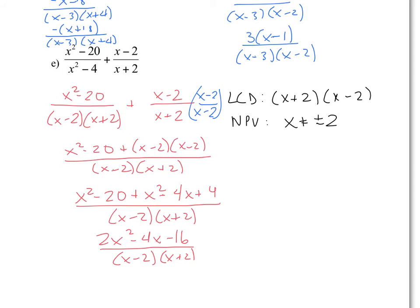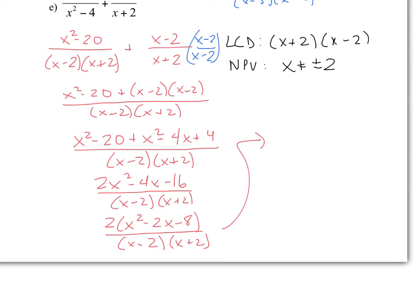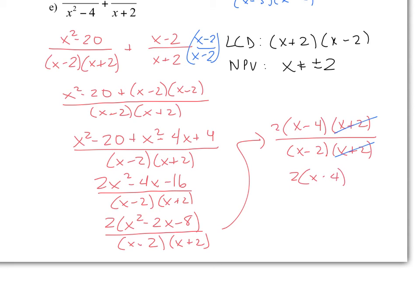You can continue to factor this. There is a common factor of 2, so factor that out first, giving 2 times x squared minus 2x minus 8, over x minus 2 times x plus 2 — keeping the denominator in factored form. The trinomial factors further as x minus 4 times x plus 2. So we have 2 times x minus 4 times x plus 2, over x minus 2 times x plus 2. Now x plus 2 is a common factor — cancel it — and we finish with the simplified form of 2 times x minus 4, divided by x minus 2.